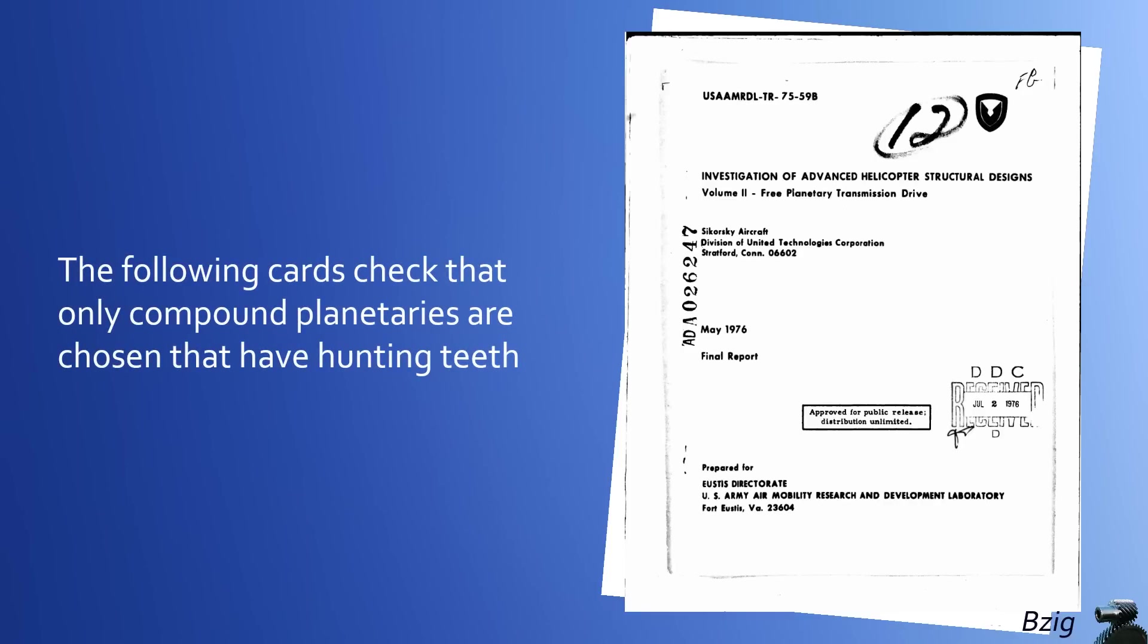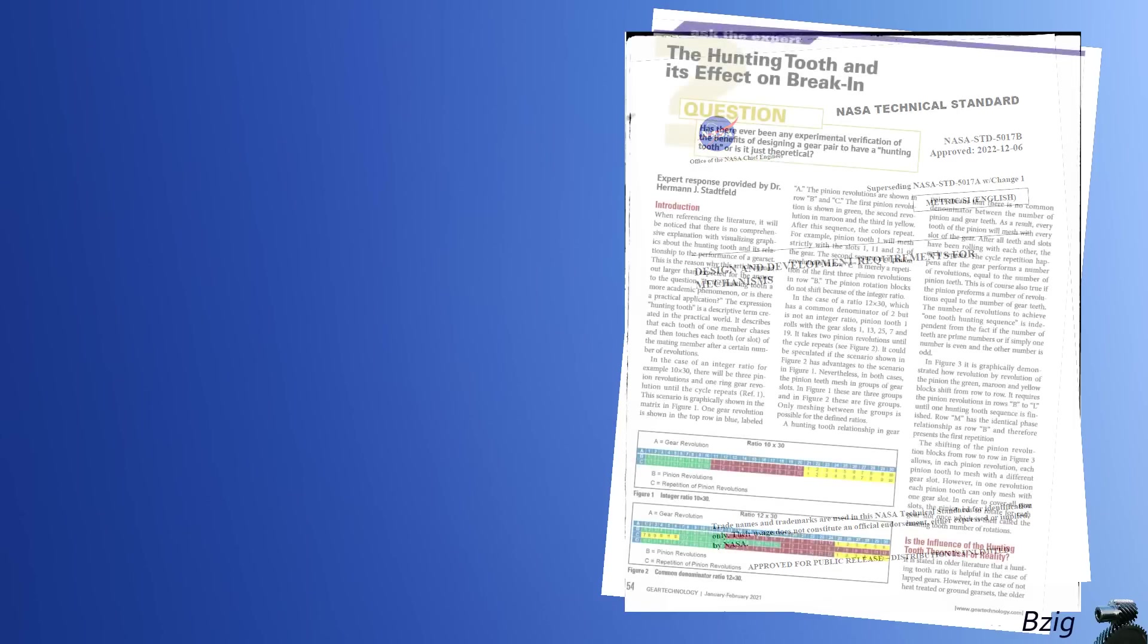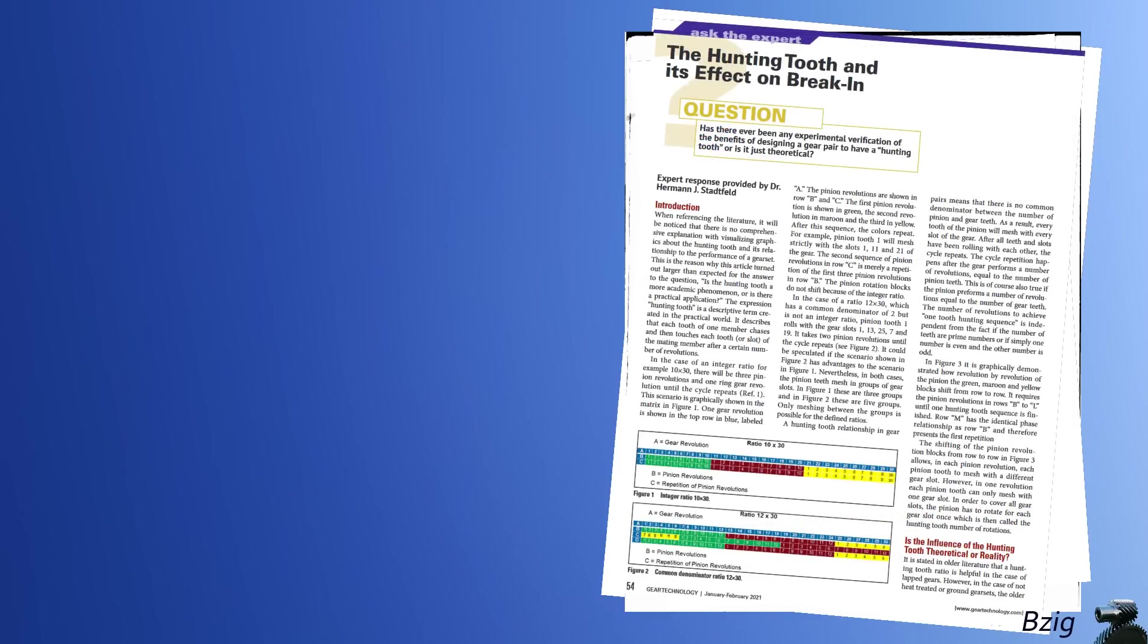And here's an ARMY report that's kind of a how-to guide for the FORTRAN code used to design helicopter gears, and the report says: The following cards check that only compound planetaries are chosen that have hunting teeth. And while not a helicopter-specific design guide, this NASA handbook says: Where pitch line velocities are low and cycles are high, hunting-tooth gear ratios should be used to distribute wear. Complete hunting occurs when every tooth on a gear mates with every tooth on the other gear. This occurs when the numbers of teeth have no common factors higher than 1.